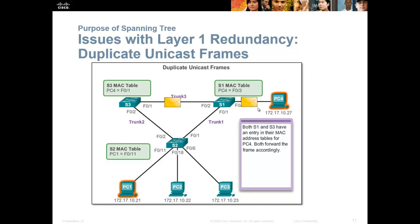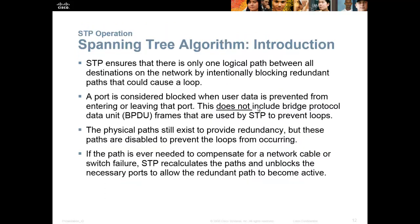In a nutshell, switching loops are bad. We want redundant connections and load balancing where possible, but we don't want switching loops because they cause all kinds of issues. Enter spanning tree: one switch is designated the root bridge — the master — and the decision is made from the master's point of view about the fastest way to get to all the other networks. All extra paths are shut down so there are no loops. How does spanning tree do this? On Cisco switches, spanning tree is enabled by default.